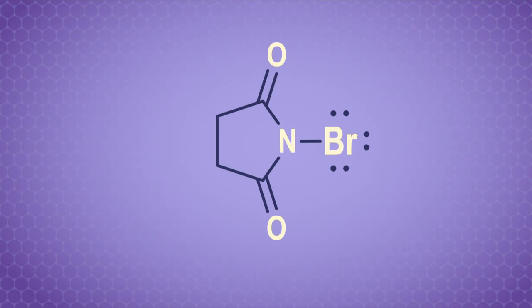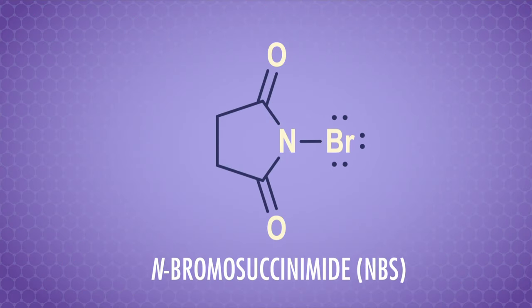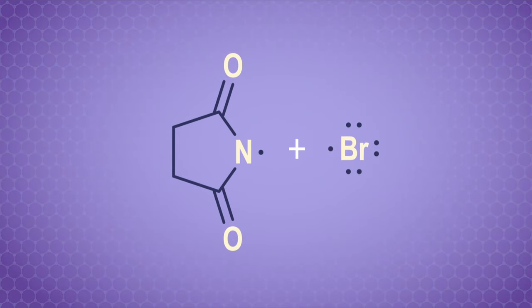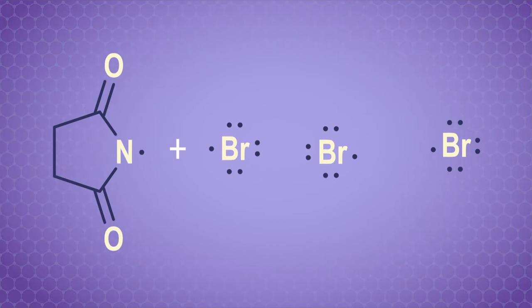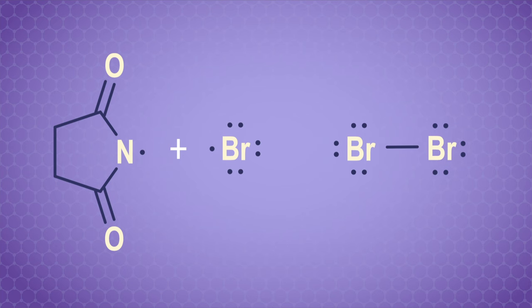As with all radical reactions, the first stage is initiation. We need a bromine radical. To make one, we'll take a bromine-containing source called N-bromosuccinamide, or NBS for short, and irradiate it with light. This splits the molecule into radicals, and some of these radicals form a small amount of molecular bromine.